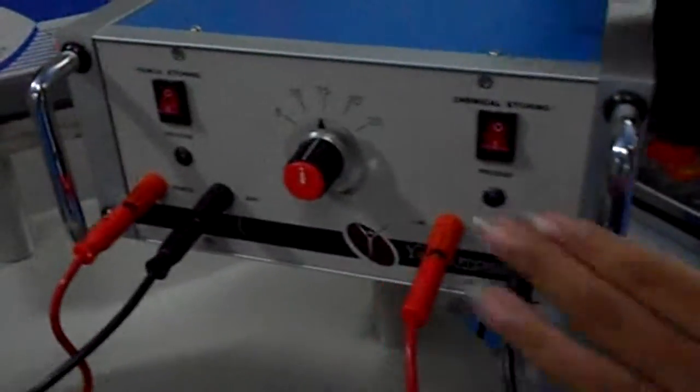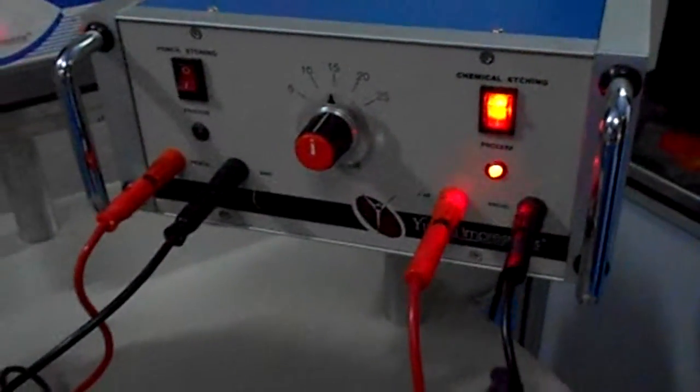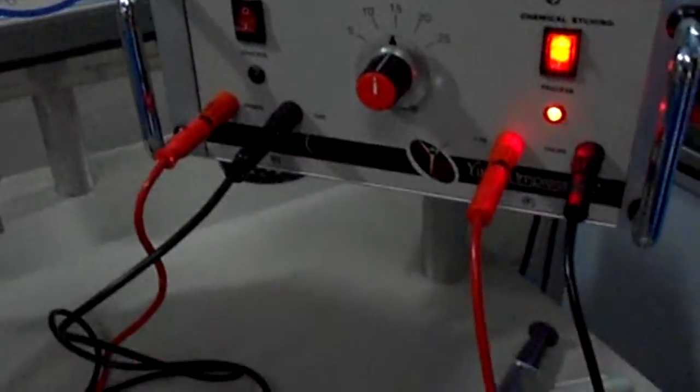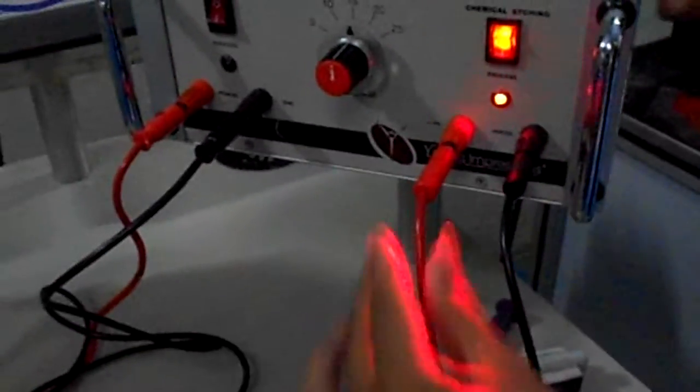Turn the power unit on. Adjust the voltage as per your requirement. Connect the red cable to the job and black cable to the marking head.